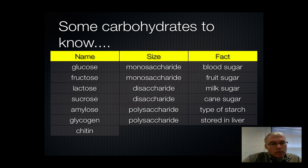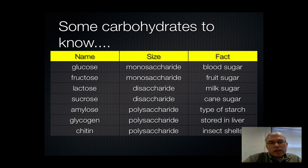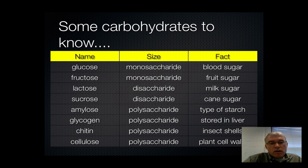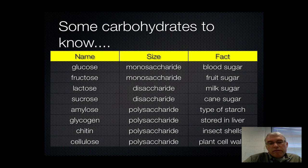Chitin is a type of polysaccharide used by insects to build their shells. It's waterproof, flexible, and indigestible. Cellulose is our fourth example of a polysaccharide — it's what plants use to build their cell walls. So we have a pretty good list of different carbohydrates varying in size, from small to large, with one fact about each carbohydrate.